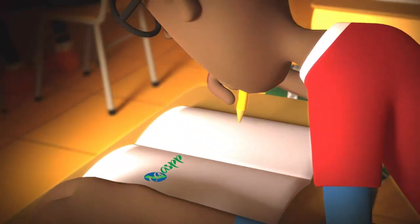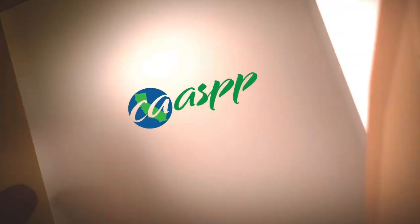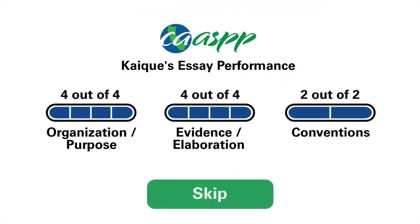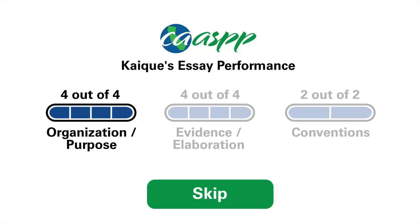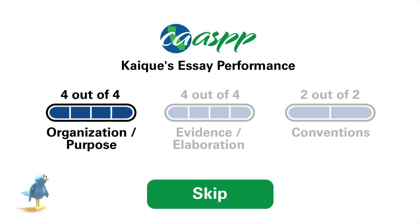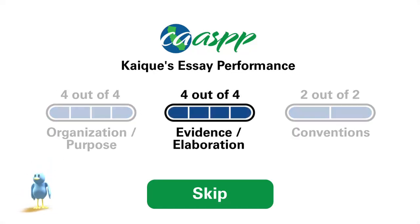You also had to write an essay. Your essay was scored in three categories. Organization and purpose measures whether your essay had a clear and complete storyline — you scored four out of four. Evidence and elaboration measures whether your essay supported the main idea using facts and details from the sources, and if you made use of effective vocabulary suited to your grade — you scored four out of four.